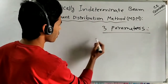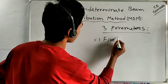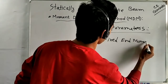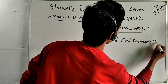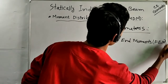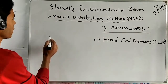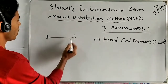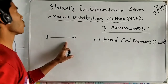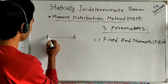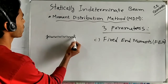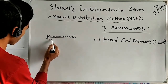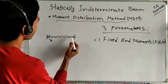First of all we need Fixed End Moments. Fixed End Moments mean: if we consider a beam with fixed supports and a load is applied on this beam, then there will be a moment at each fixed end.